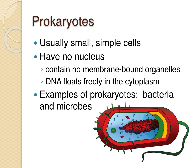Prokaryotes are usually small, simple cells. Examples would be bacteria and microbes. They don't have a nucleus — that's the main difference between a prokaryote and a eukaryote. The DNA of a bacterial cell is visible as a swirly structure in the middle; there's no nucleus, so the DNA just floats freely in the cytoplasm.